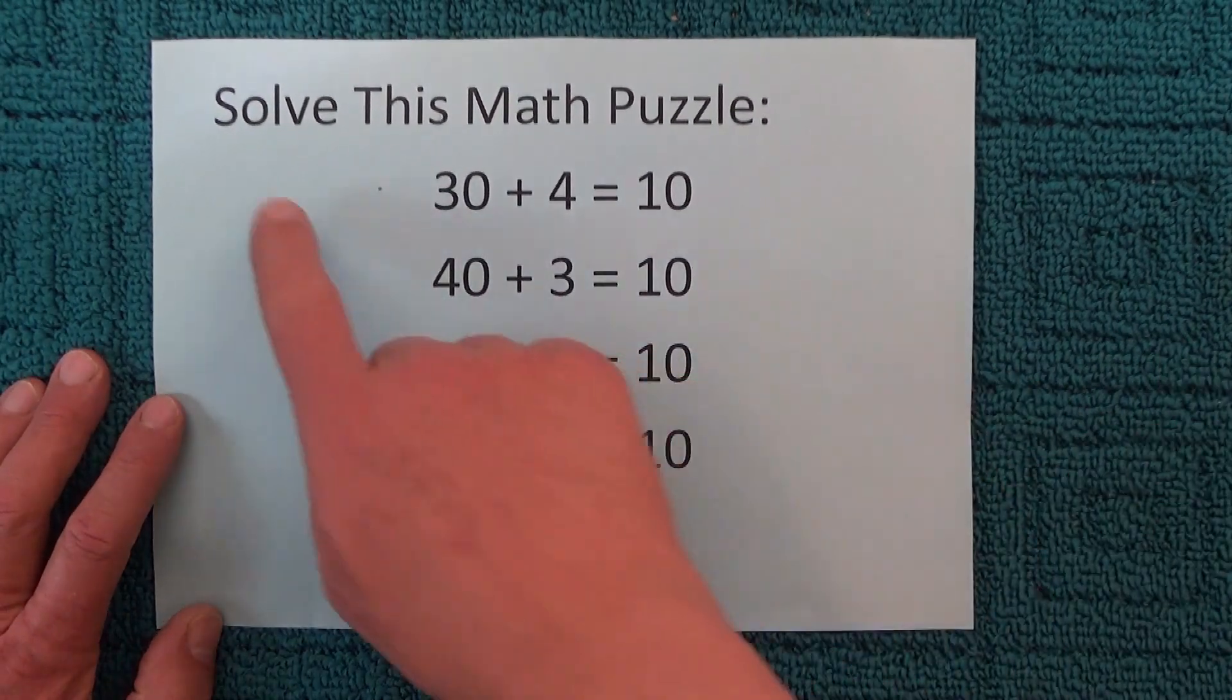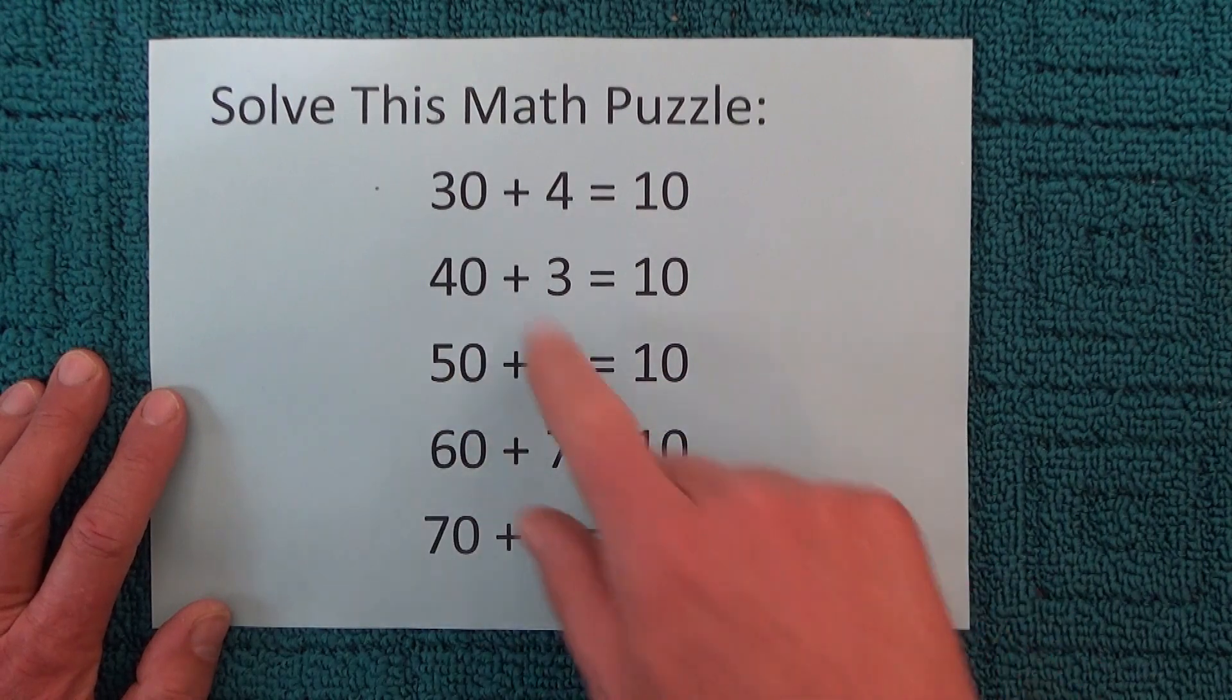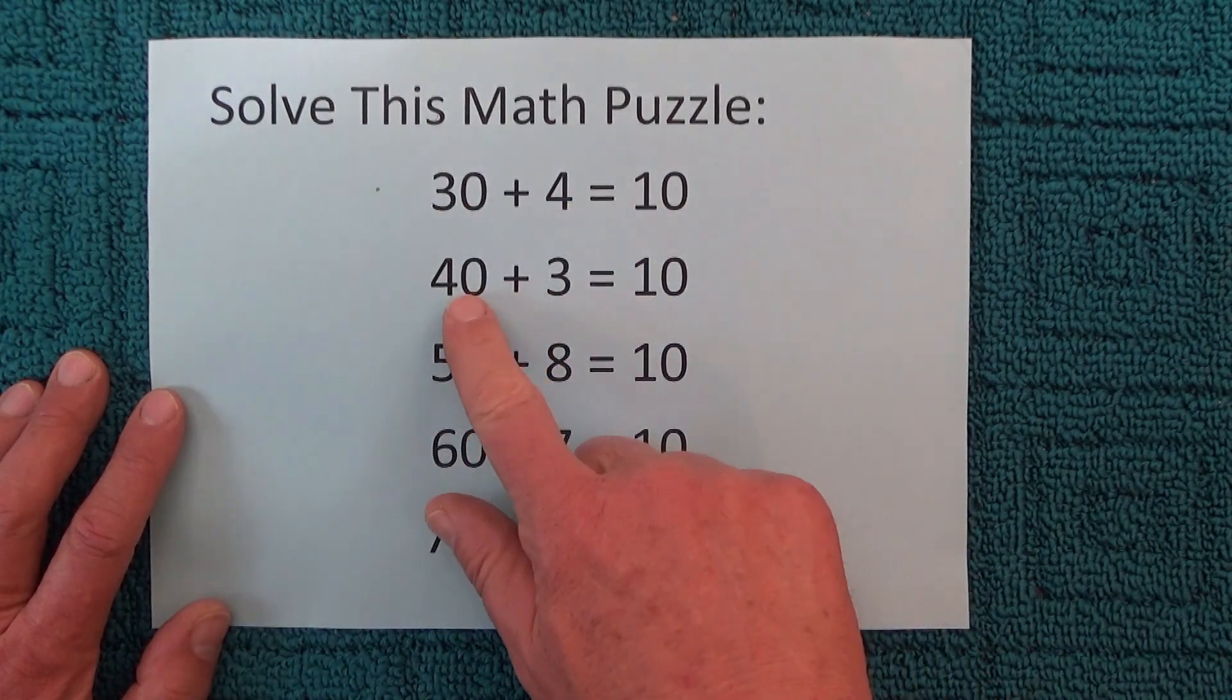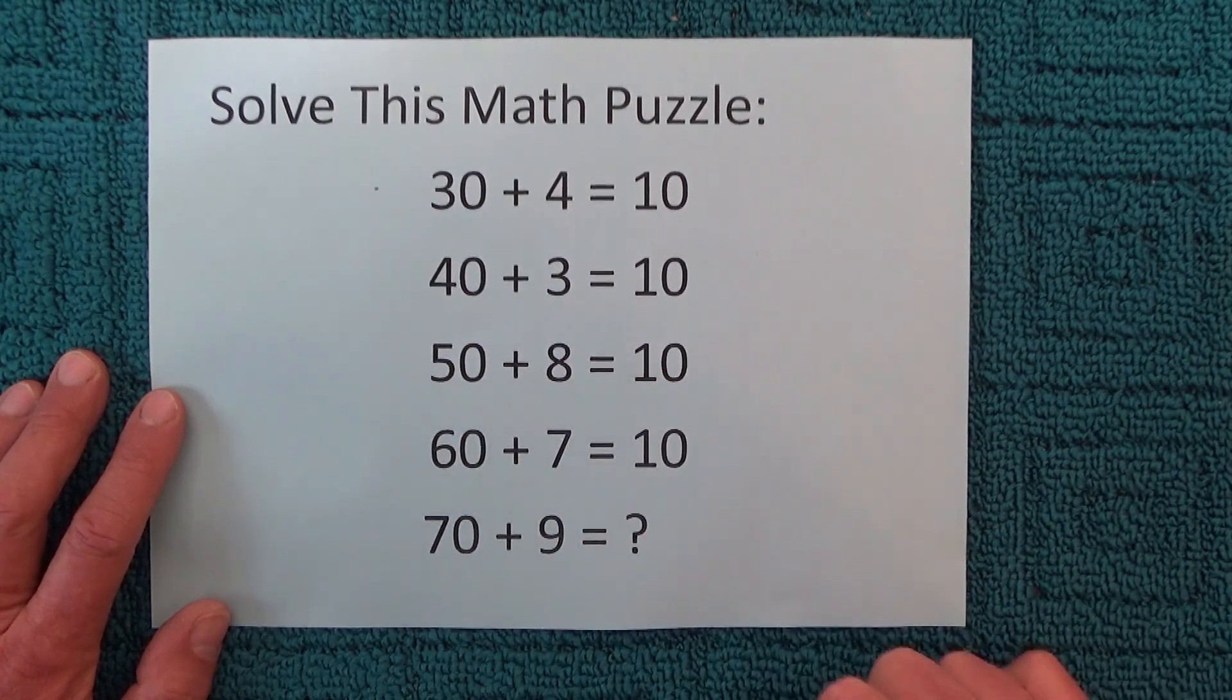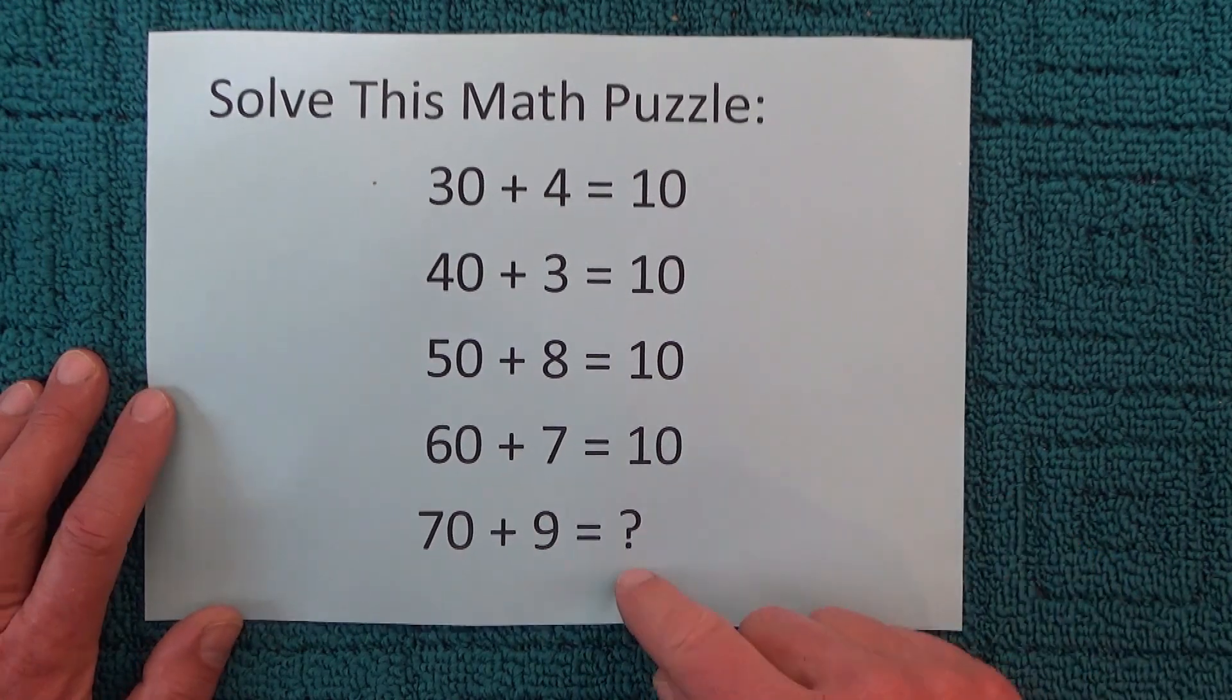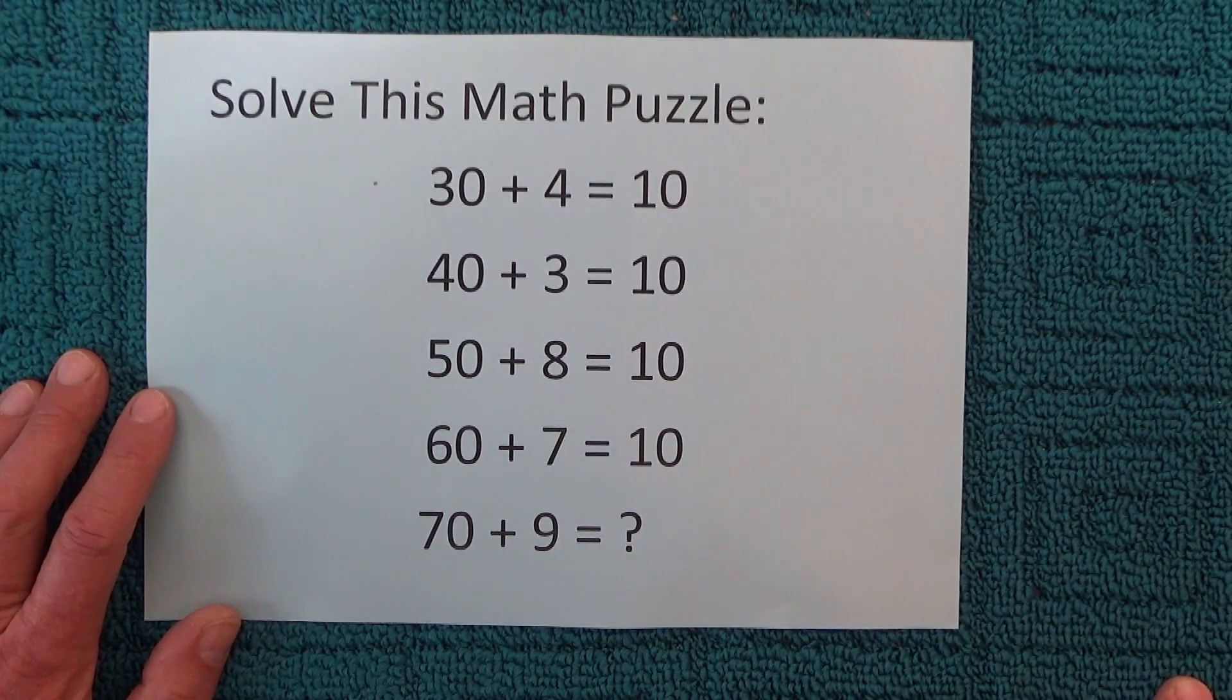Hi there. Today I'd like to share with you this great maths puzzle. The puzzle is if 30 plus 4 equals 10 and 40 plus 3 equals 10, 50 plus 8 equals 10 and 60 plus 7 equals 10, then what does 70 plus 9 equal?